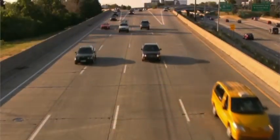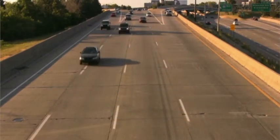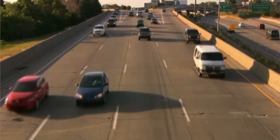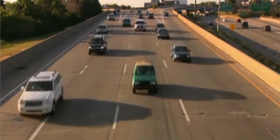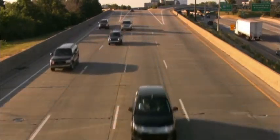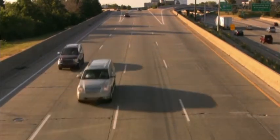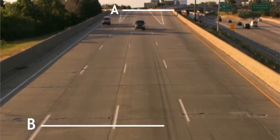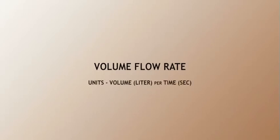The volume flow rate is the volume of blood that passes through a given area in a unit of time. Looking at these cars on the freeway will help you to understand the concepts of velocity and volume flow rates better. Ask yourself, how many cars are moving from point A to point B in 3 seconds? That's the volume flow rate. Units to express volume flow rate must include volume and time, such as liters per second.